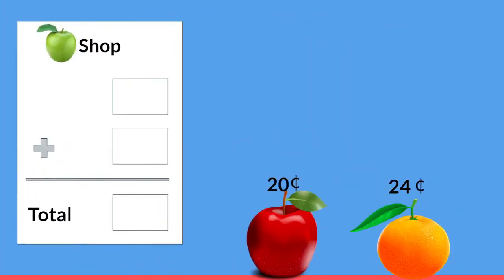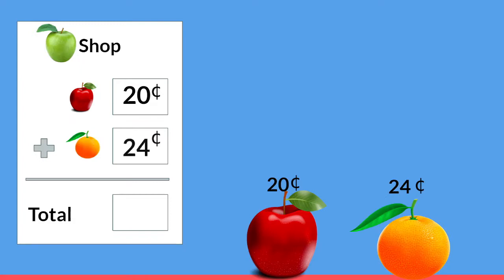Today I want to buy some yummy fruit. So when I was at the fruit shop I bought an apple — and do you know how much it cost? That's right, it was 20 cents. And also I decided to buy an orange. How much did the orange cost? That's right, it's 24 cents.